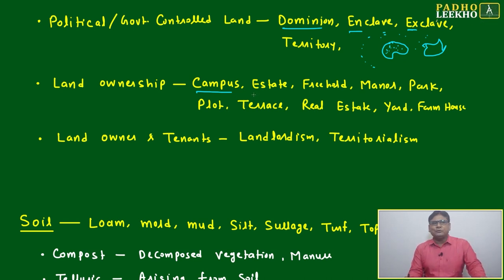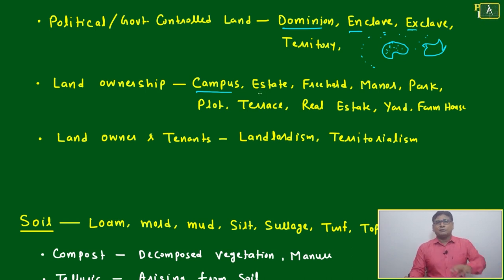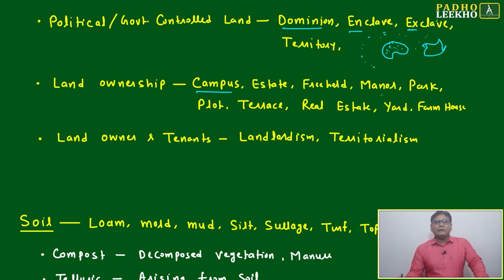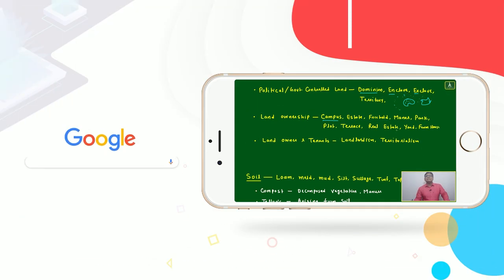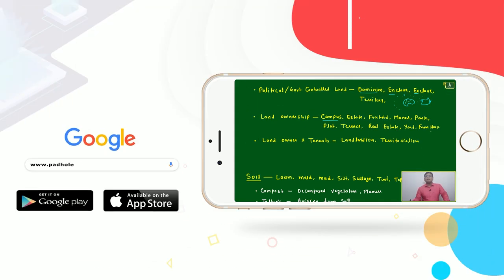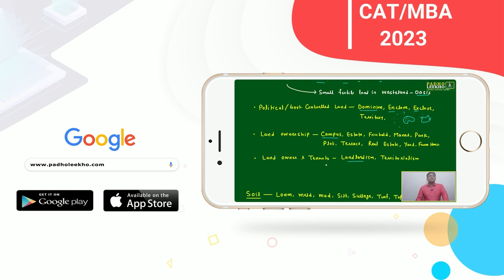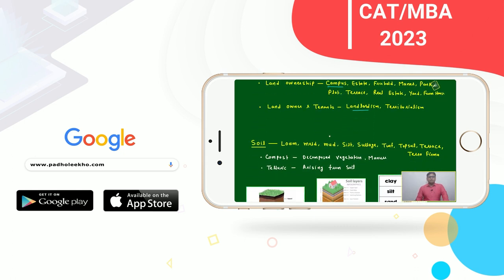Land ownership terms are very familiar in day-to-day usage. A fortified area is called a campus. Other terms include estate, freehold, manor, park, plot, terrace, real estate, yard, farmhouse, landowner, tenants, landlord, and territorialism. These are all related to land in different ways.